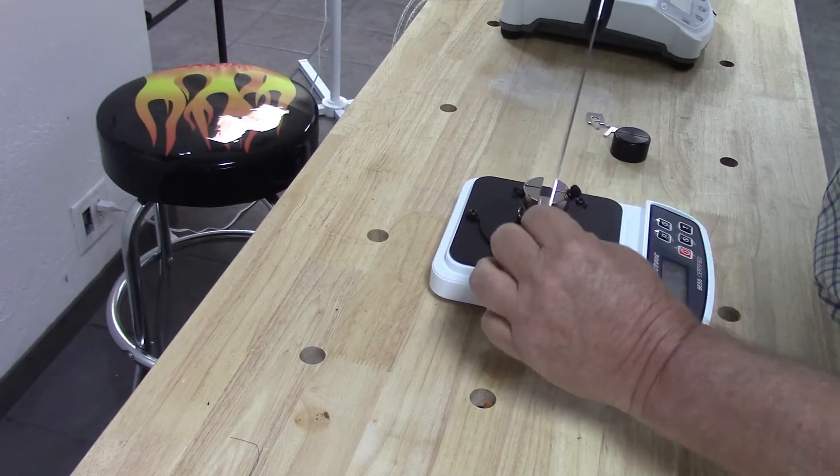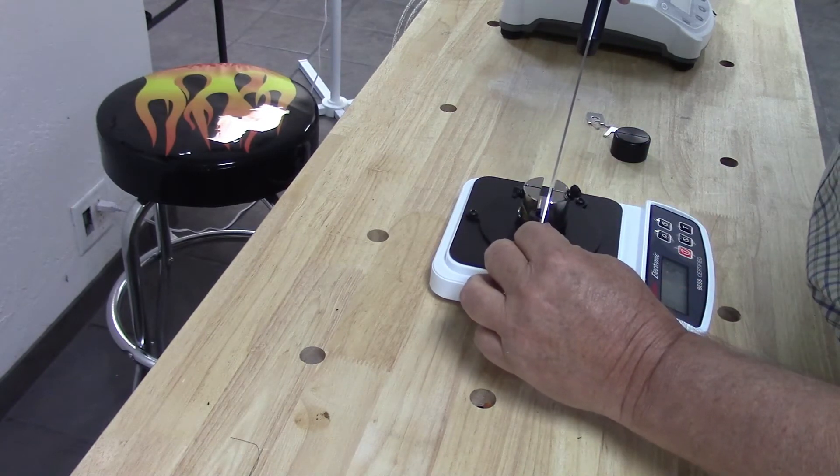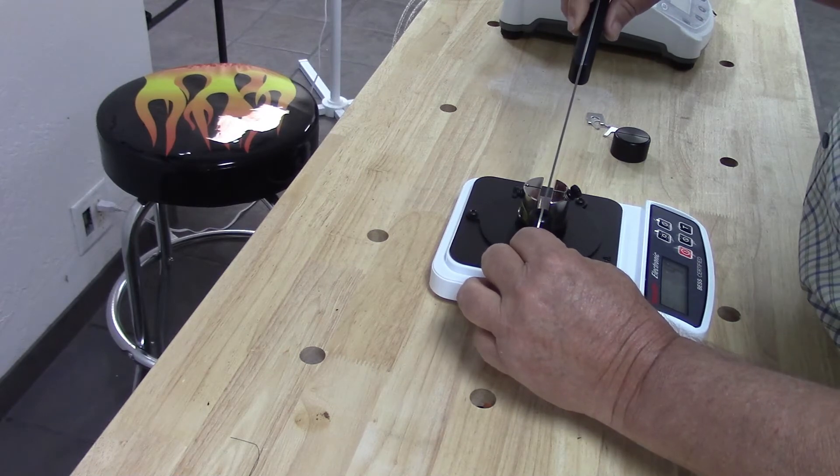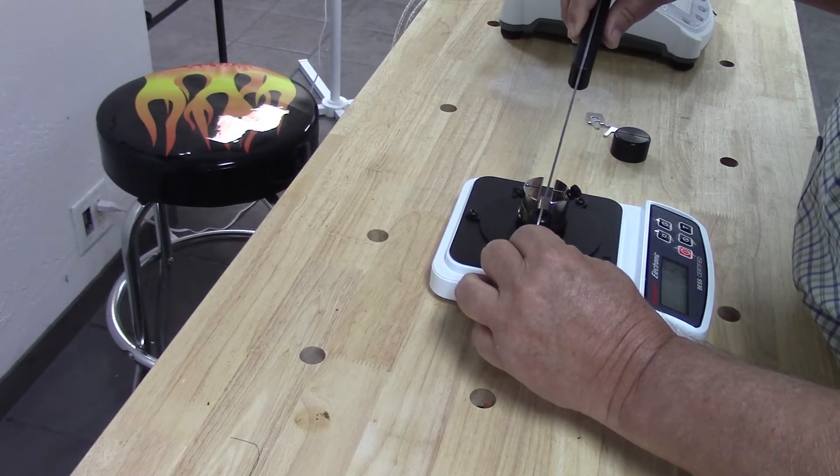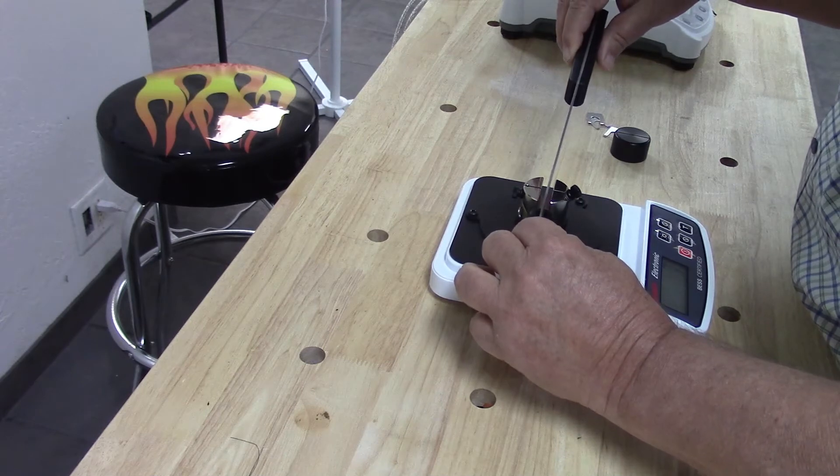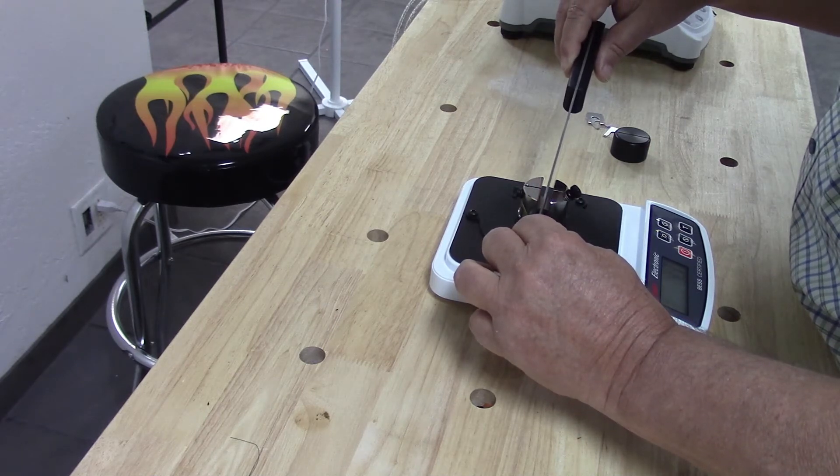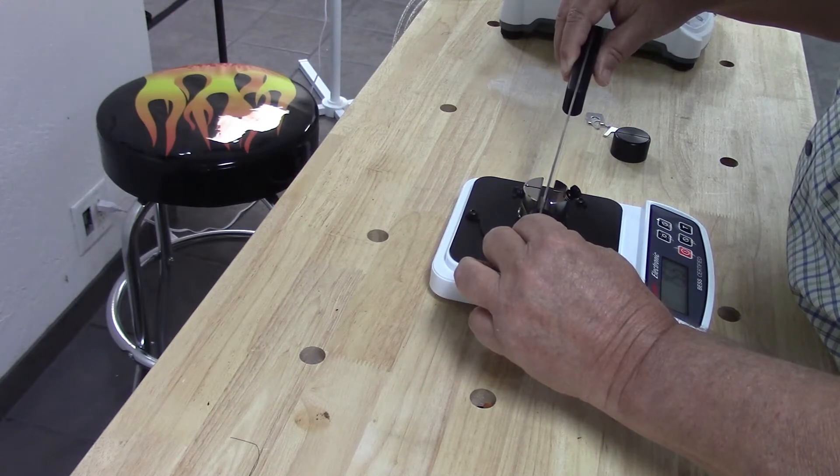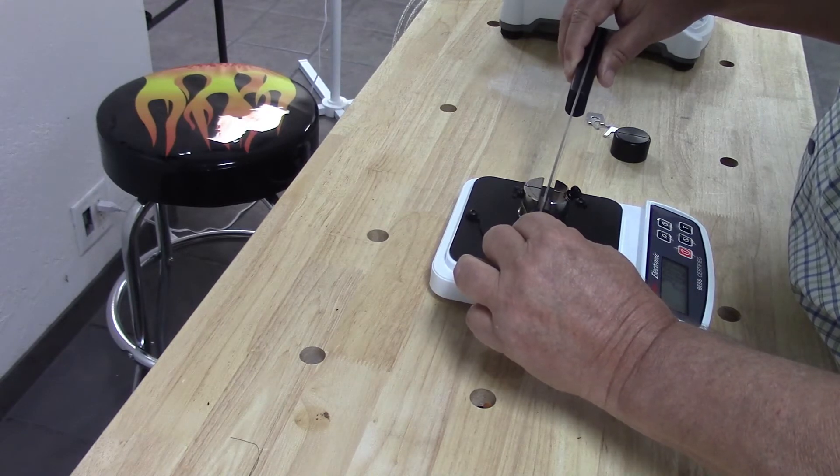Alright so here we go. I'm going to set the knife edge in the knife fulcrum and then I am very slowly going to start bringing this edge down and there I'm registering numbers and there I go.